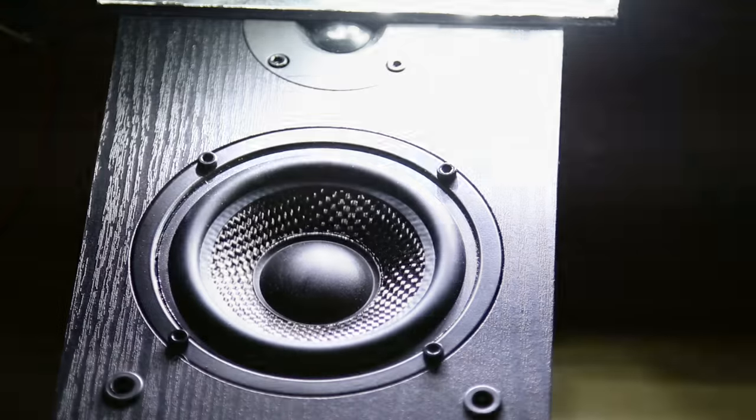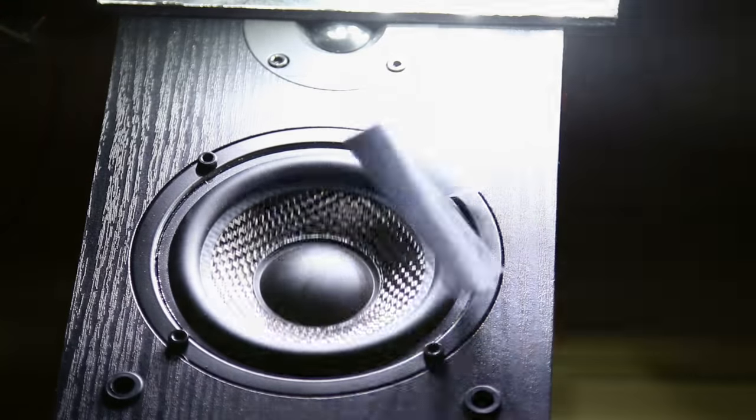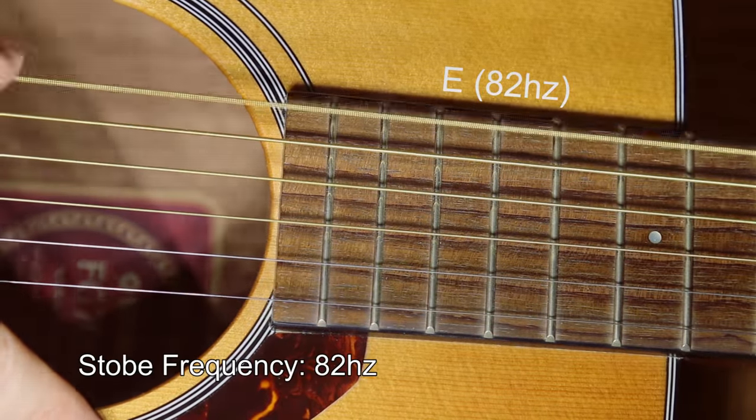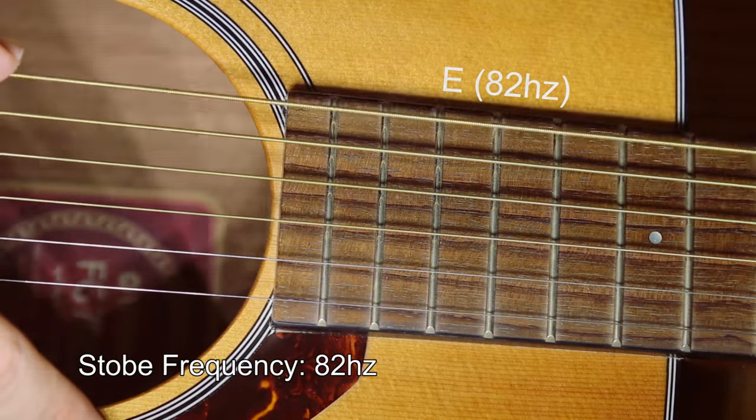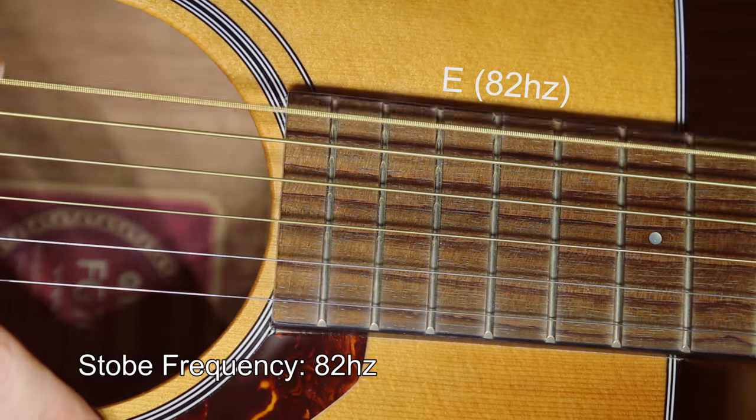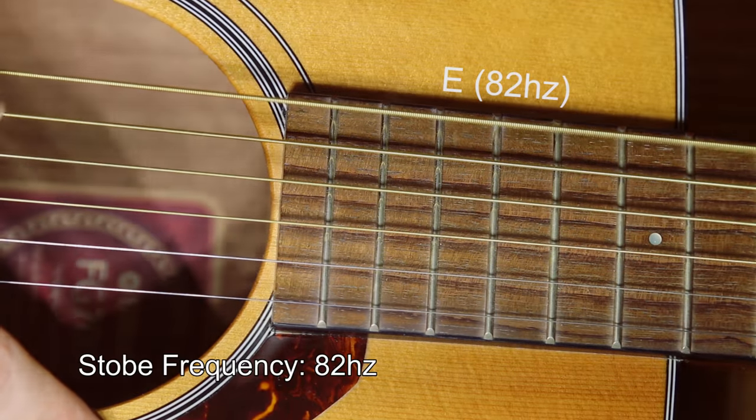If we offset the frequency just slightly, we can get the appearance of slow motion. One neat result is that we can now use the strobe light to tune a guitar. When the note's a little flat, like in this case, the string moves slowly, but as we get closer and closer to the target note, that motion ceases.